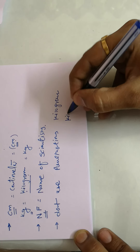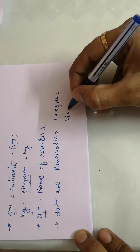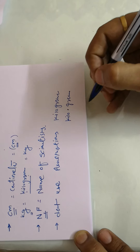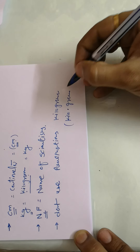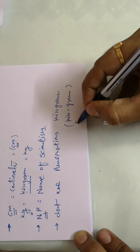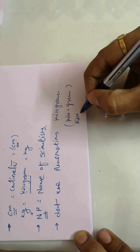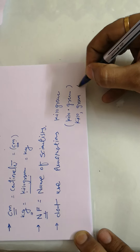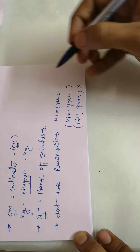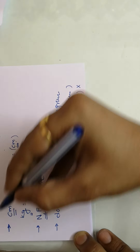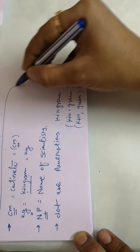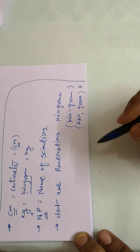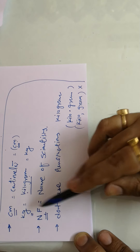Keep in mind: you cannot use any punctuation. For example, when writing kilogram, you cannot use 'kilo.gram'. Mathematically a dot for multiplication is okay, but putting 'kilo,gram' with a comma is not accepted.